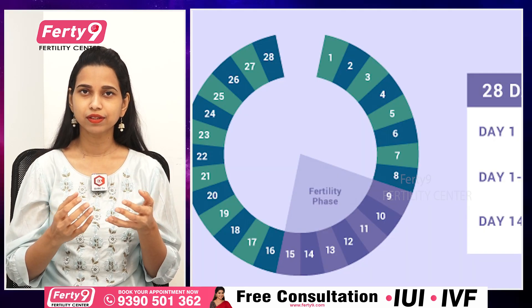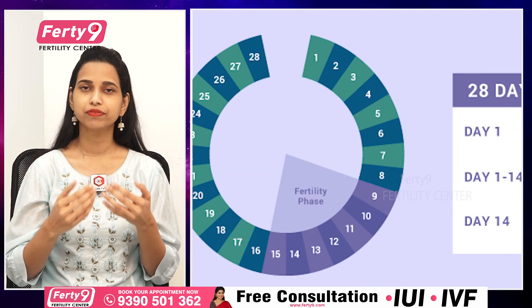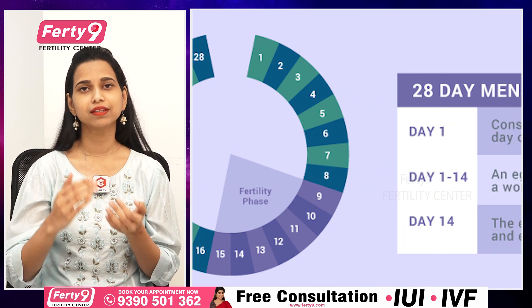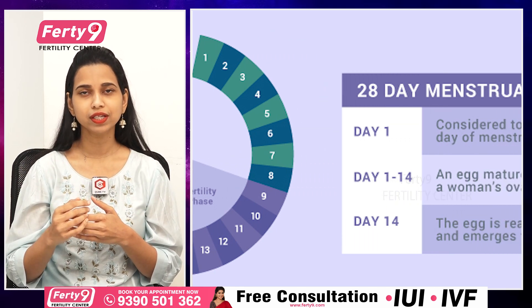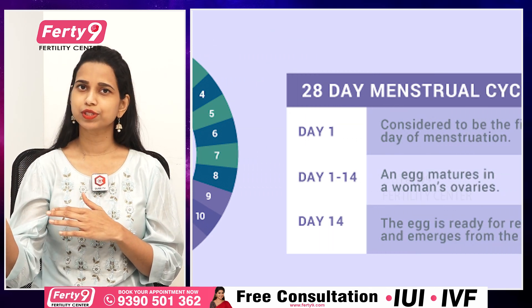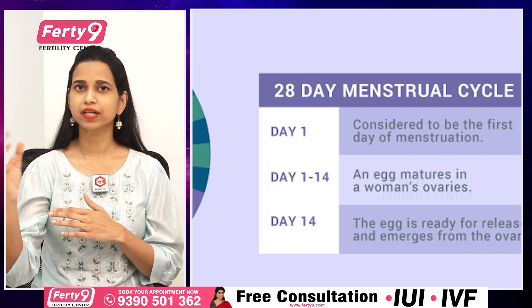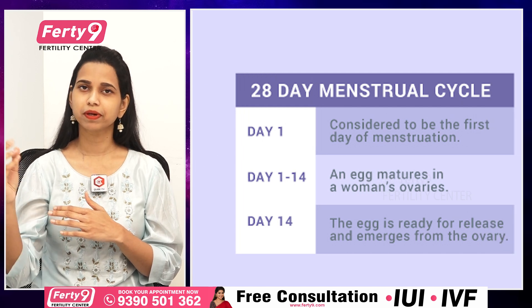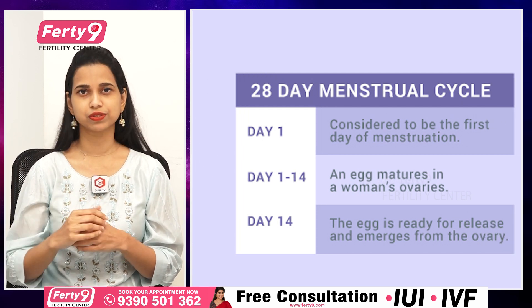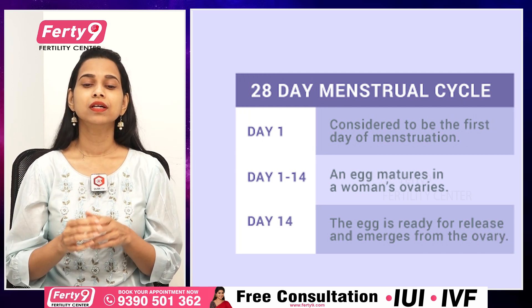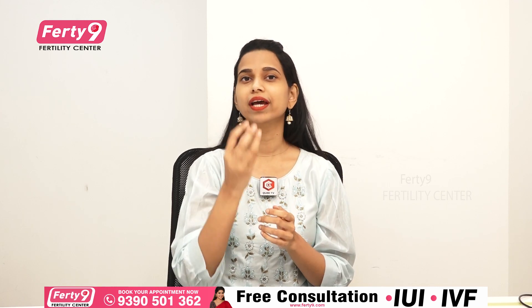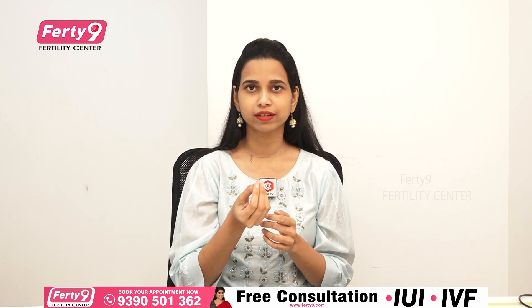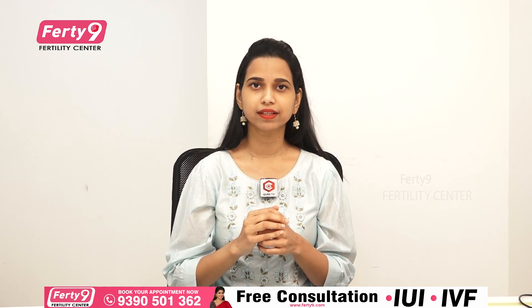Every month, normally, female menstruation occurs. On the 14th day, there is egg release. Then periods follow. If sperm meets the egg, pregnancy occurs; if not, periods happen. This period involves a common lining in the uterus, which is shed and we count that as bleeding.